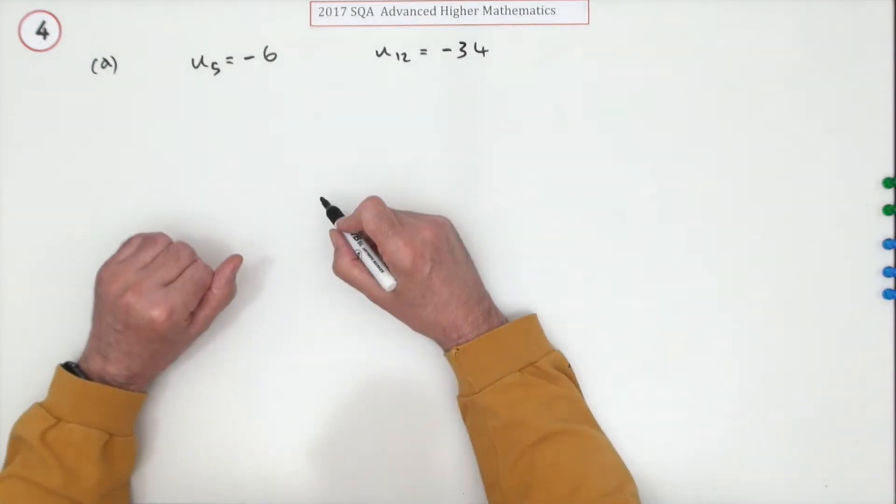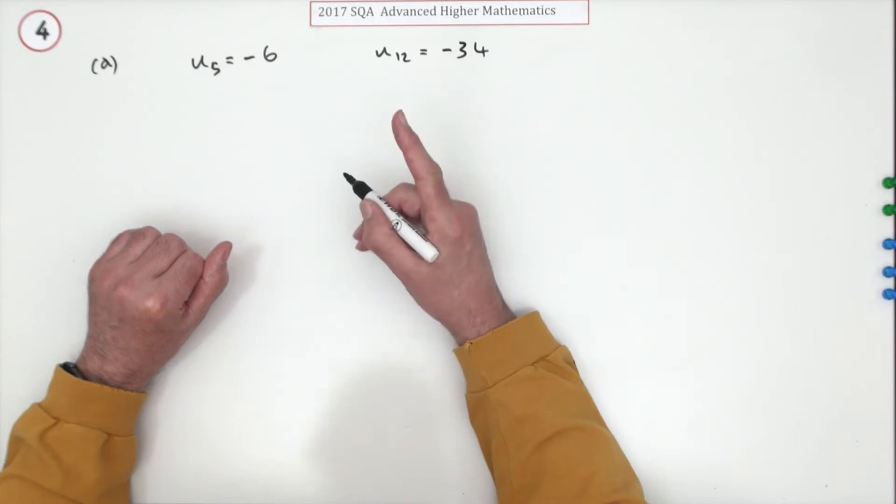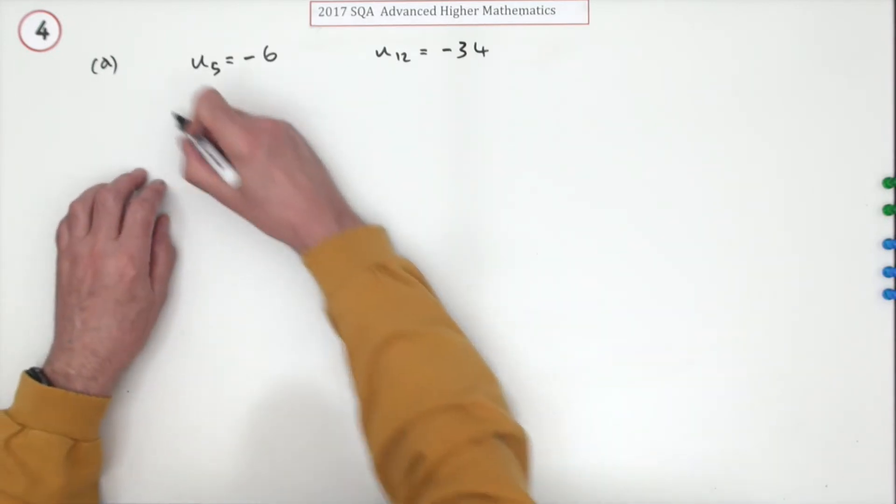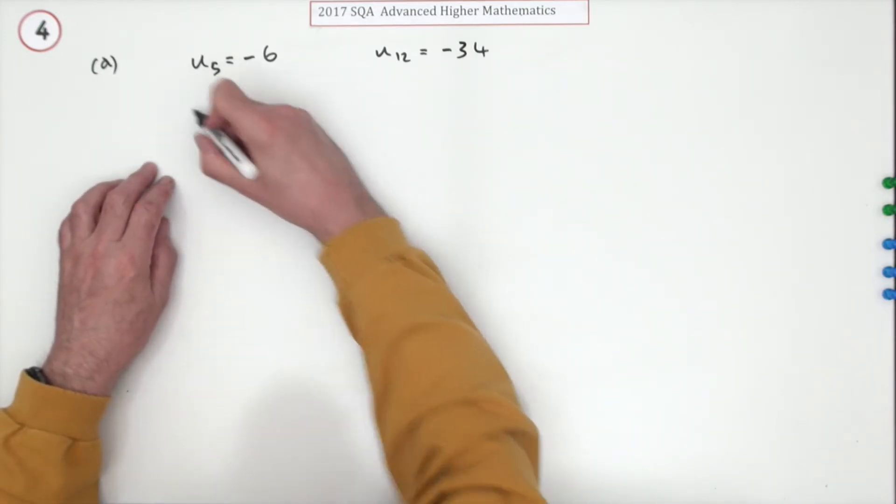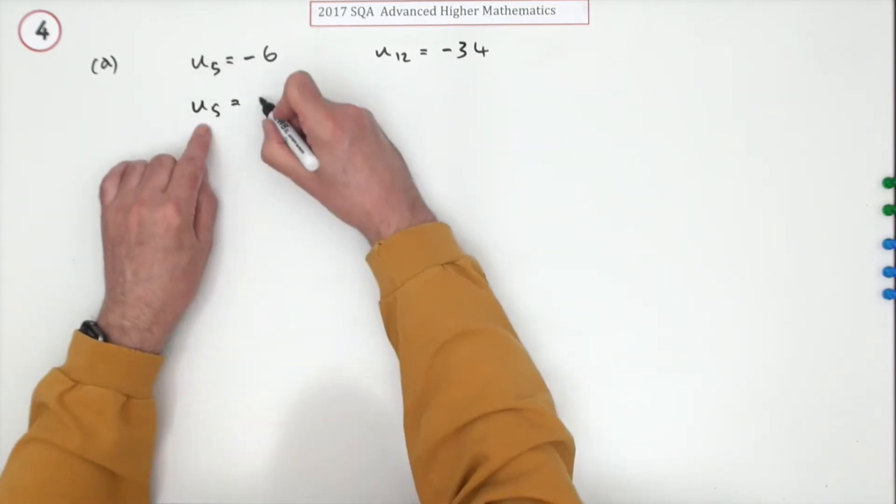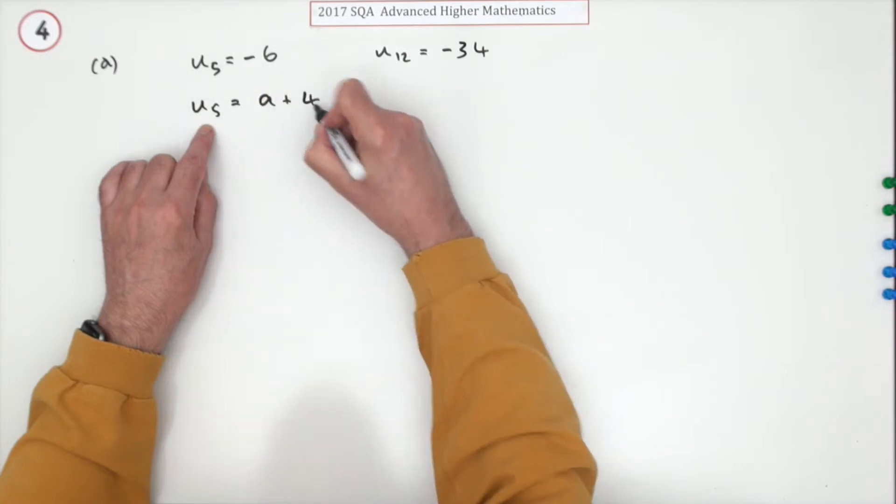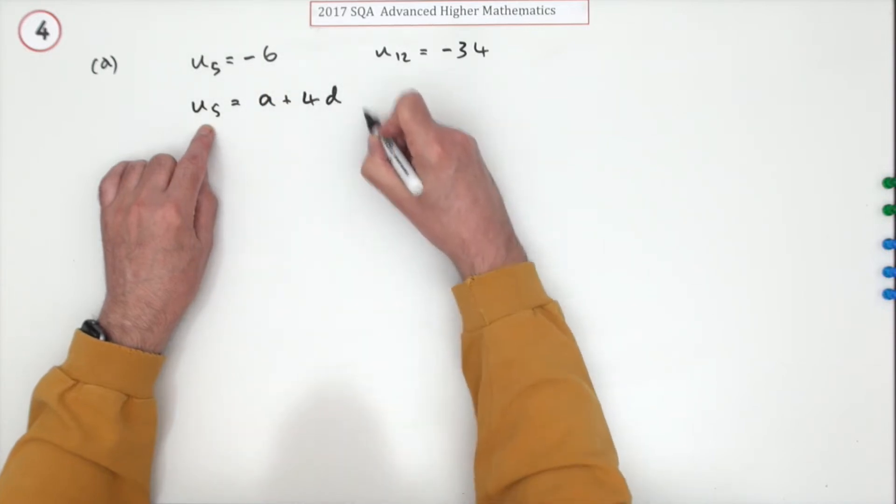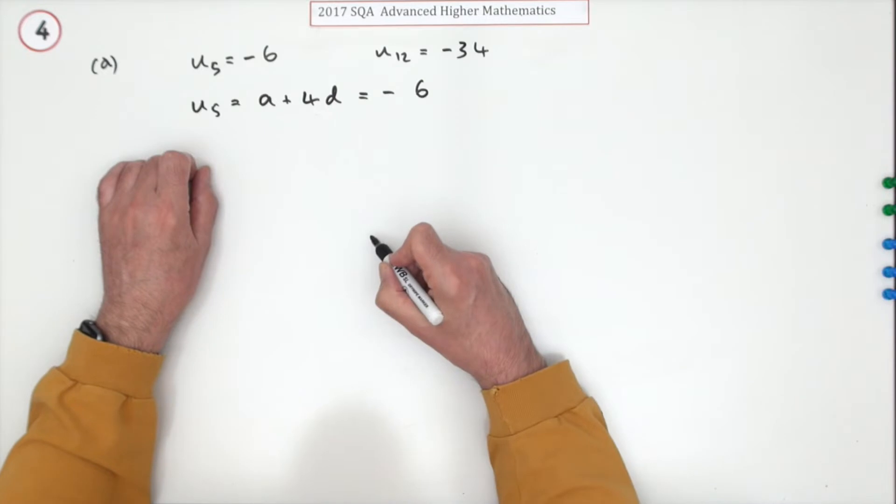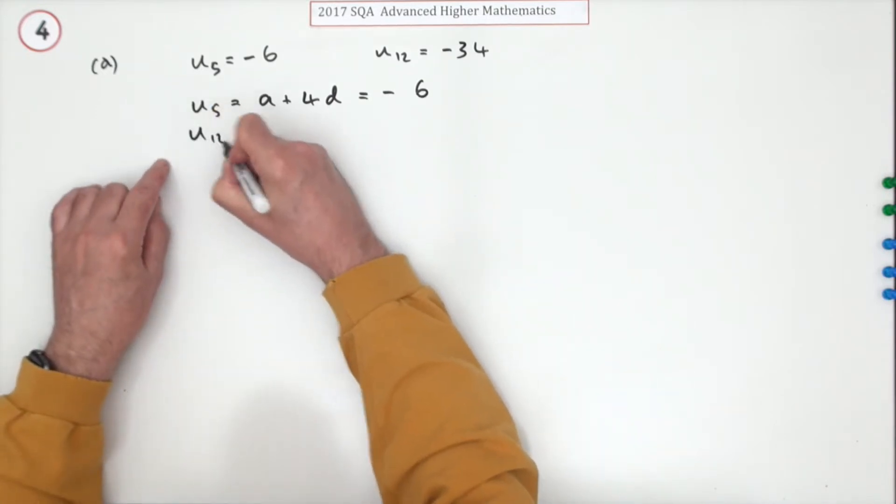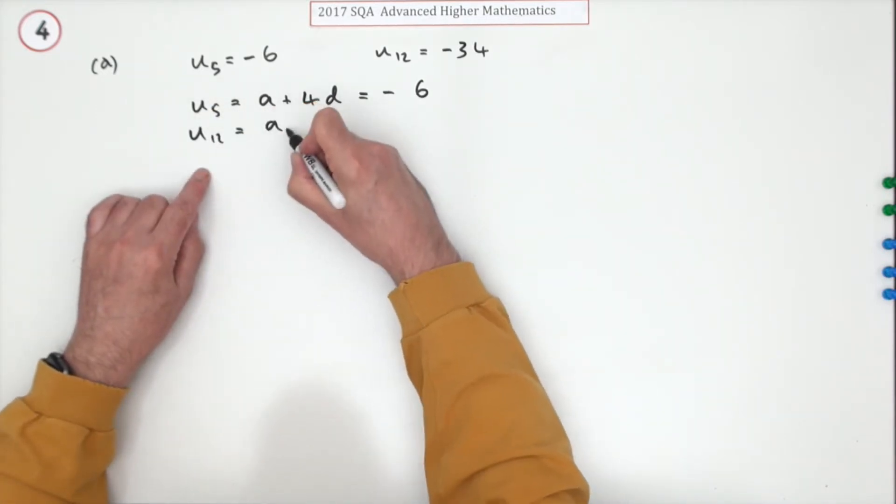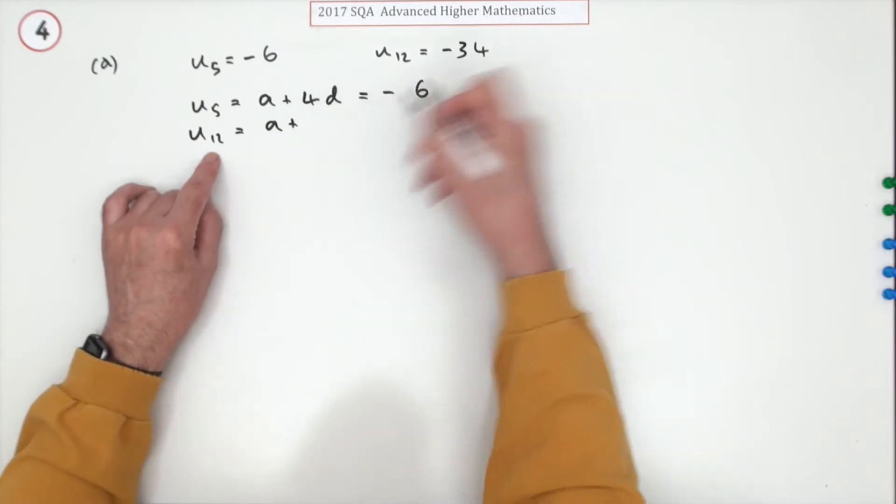It doesn't give the formula for an arithmetic sequence at the front, so what we've got is u5 would be made up from the first term plus one less, that's four lots of the common difference, and that comes to negative six. u12 is made from the first term plus 11 steps of the common difference, and that comes to negative 34.